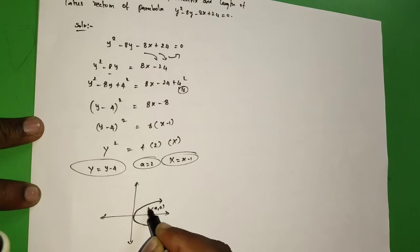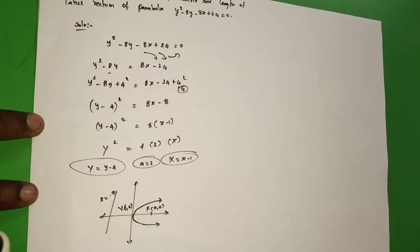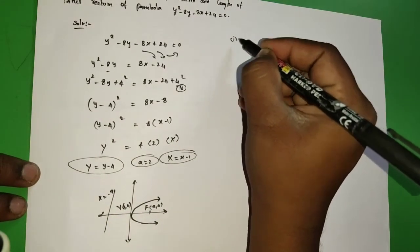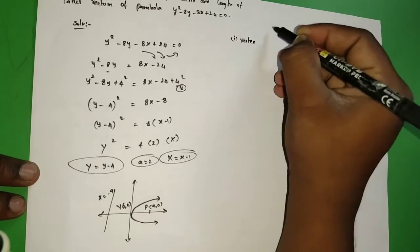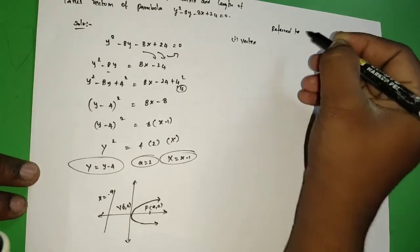So it was (a, 0) for focus, vertex at (0, 0), and directrix x = -a. So first one, vertex. Before that, write X = x - 1, and x, y coordinates.